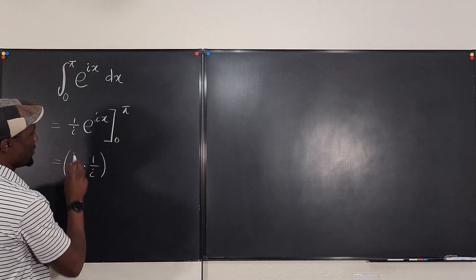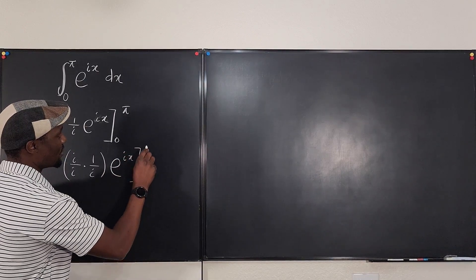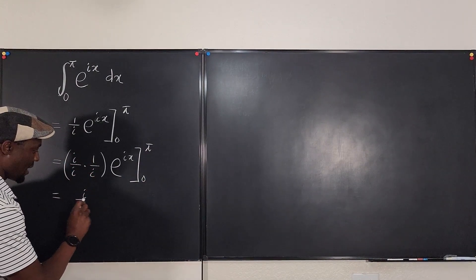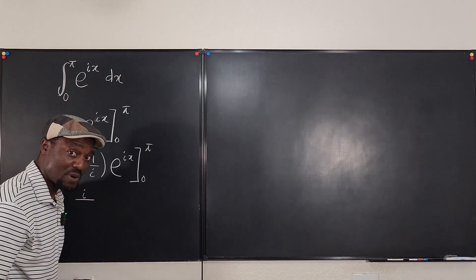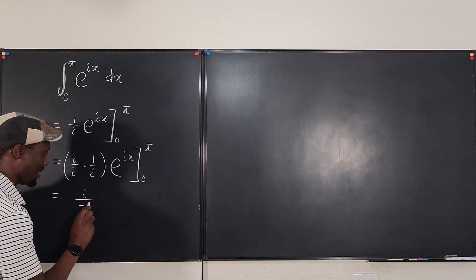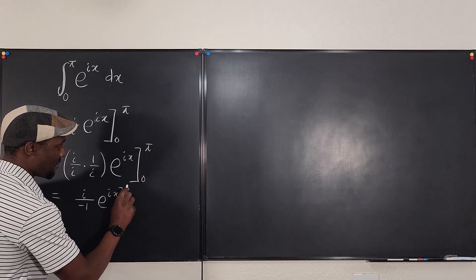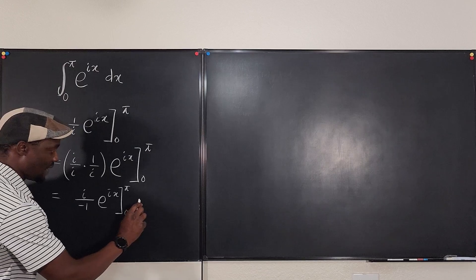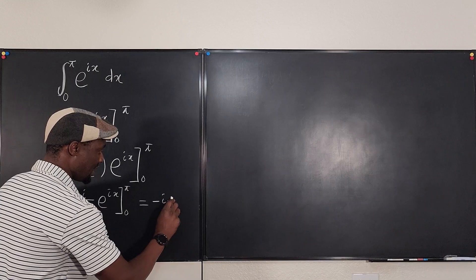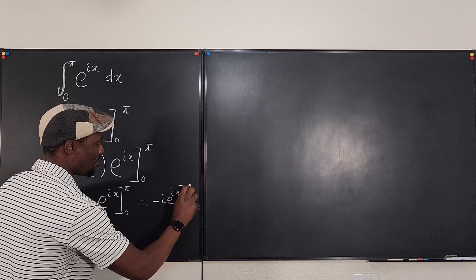After rationalization, the numerator becomes i, and the denominator becomes i times i, which is i squared. Since i squared equals negative one, the denominator is negative one. So the expression simplifies to negative i times e to the ix, evaluated from zero to pi.